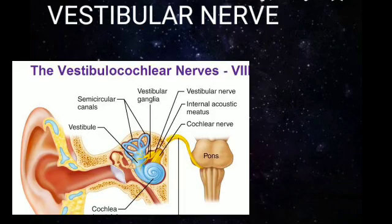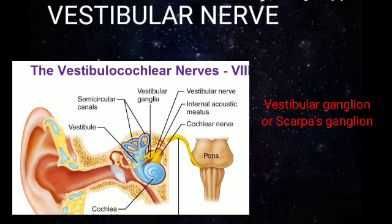The sensory ganglia related to the vestibular nerve is called the vestibular ganglion, also called Scarpa's ganglion. This vestibular ganglion is located in the lateral end of the internal acoustic meatus.